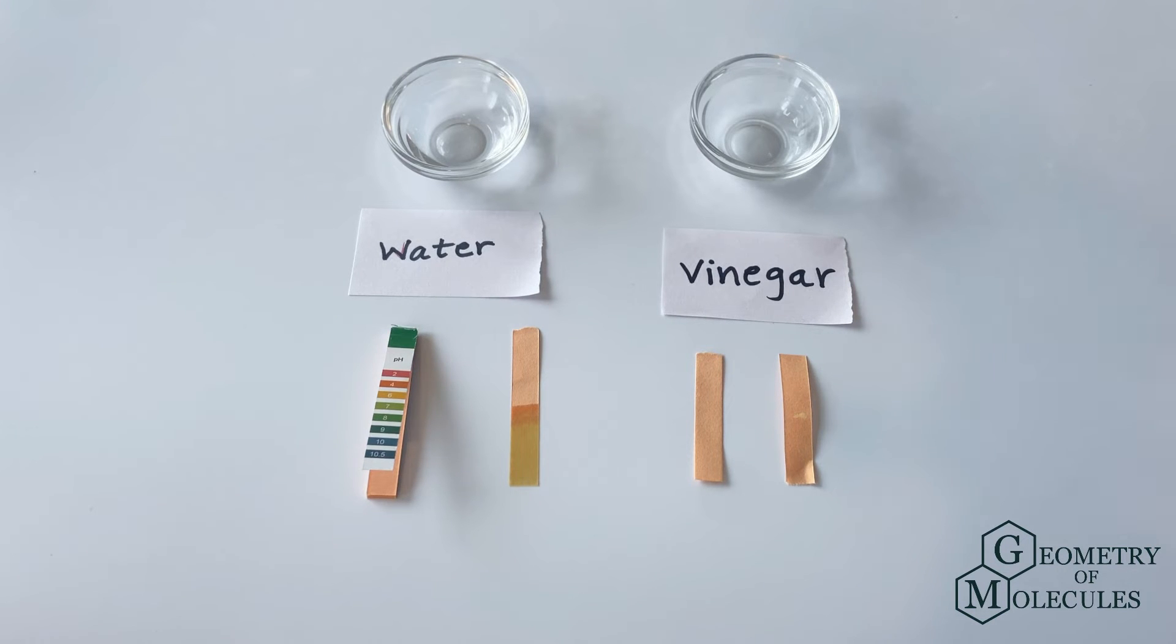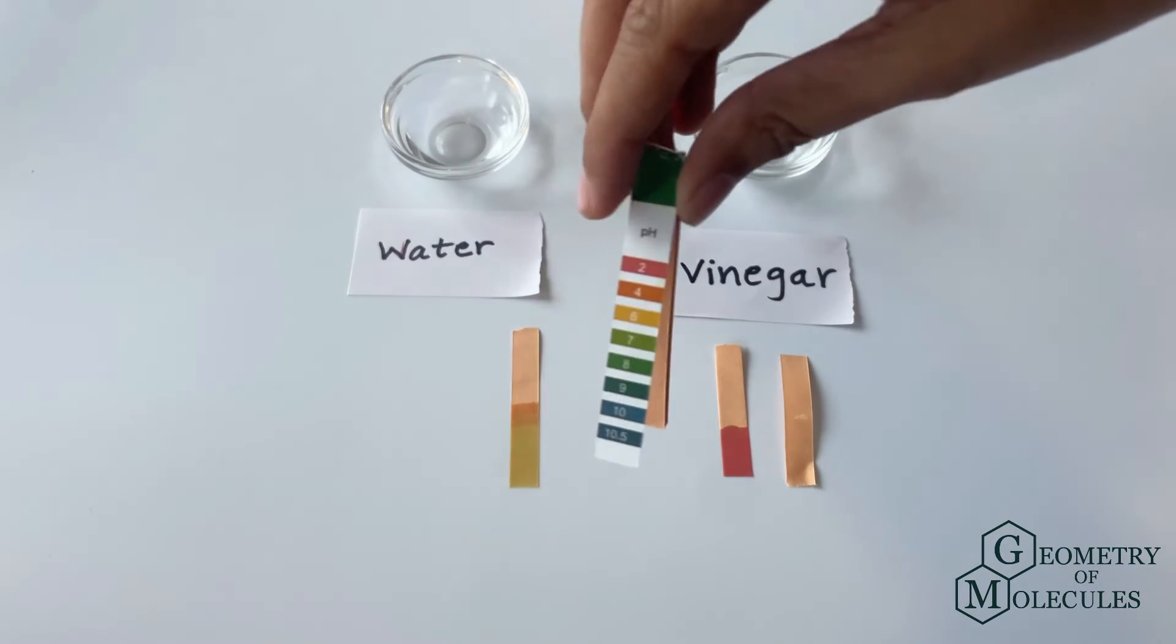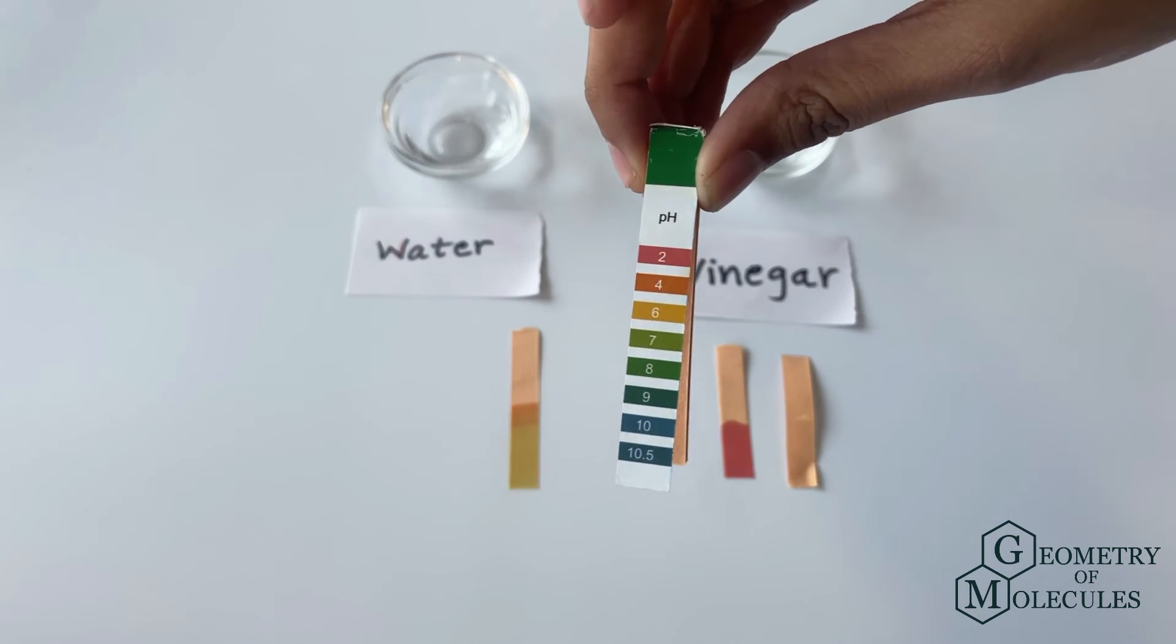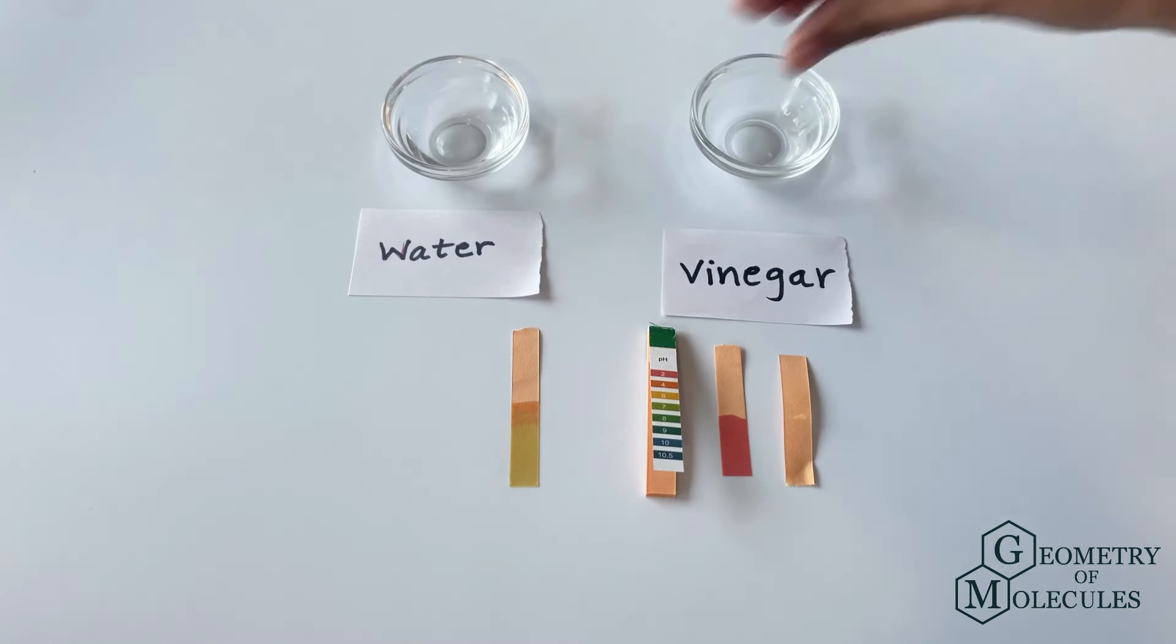Now let us dip a pH strip into this vinegar and see what its nature is. As you can see, the color has instantly changed from orange to dark pink, which indicates that it has a pH of 2, meaning it is acidic.